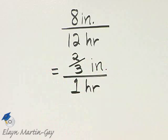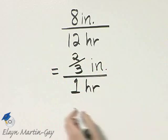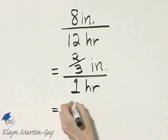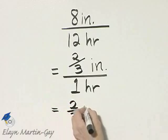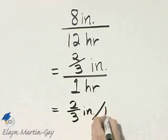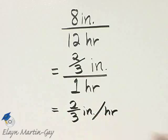So notice this is a unit rate. It doesn't look very pretty. I will write this as 2 thirds inch per hour using this format.